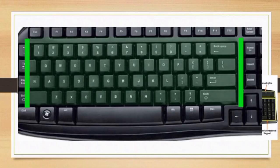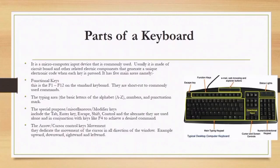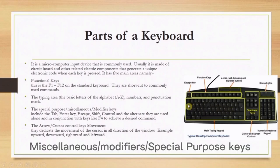The second area is the typing area, which is composed of A to Z, symbols, and numbers. On a keyboard it is located from this area to here.